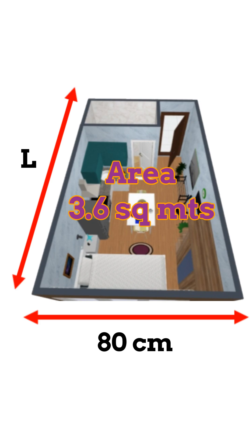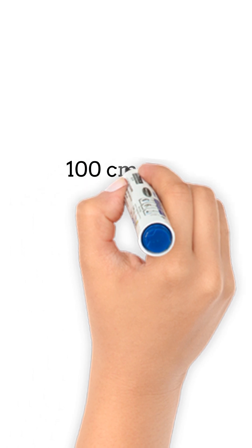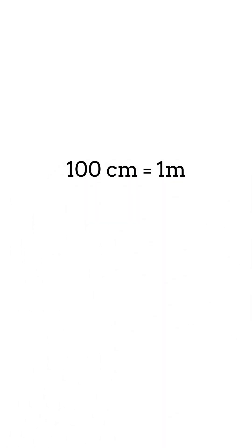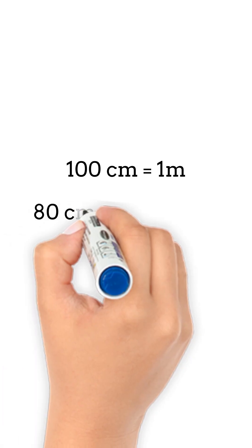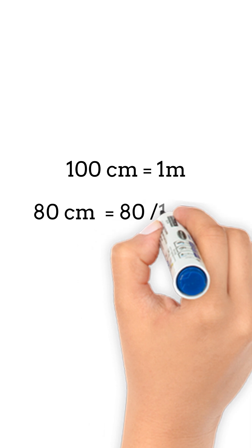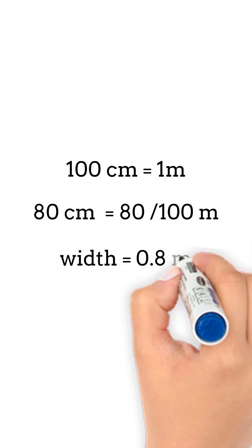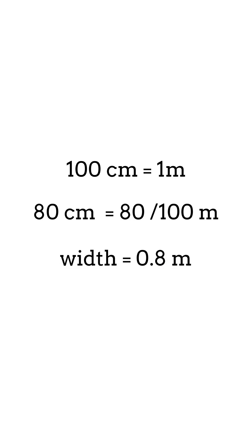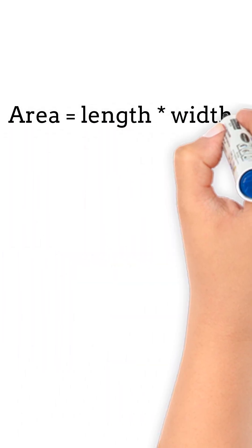First, we will have to convert the width from centimeters to meters. We know that 100 centimeters is equal to 1 meter, so 80 centimeters must be equal to 80 divided by 100 meters, that is 0.8 meters. Using the formula for the area of a rectangle: area equals length multiplied by width.